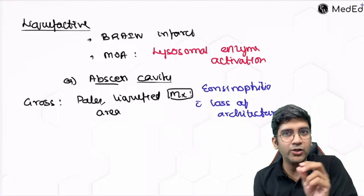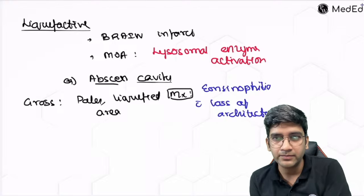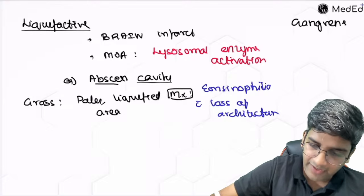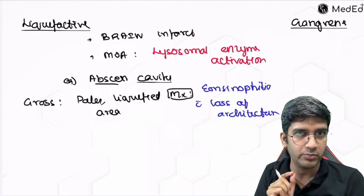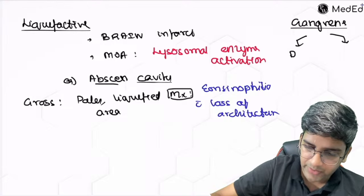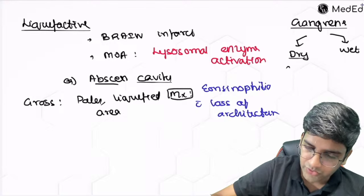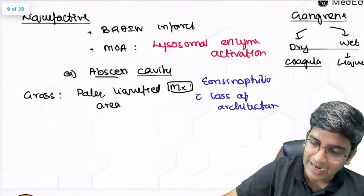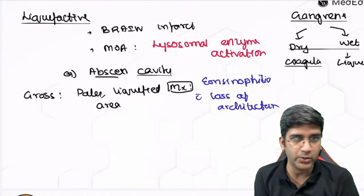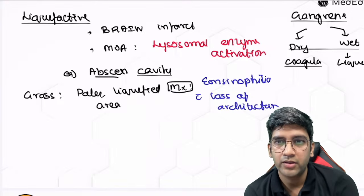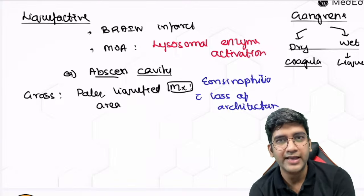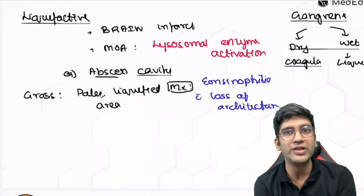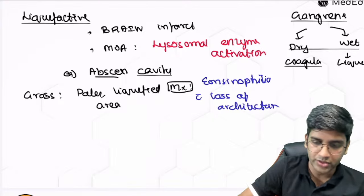Gangrene is a gross terminology, not microscopic. It has two types: dry gangrene, which shows coagulative type of necrosis, and wet gangrene, which shows liquefactive type of necrosis. Nuclear changes — pyknosis, karyorexis, and karyolysis — are seen only in necrosis, not in apoptosis.